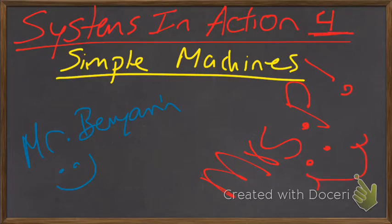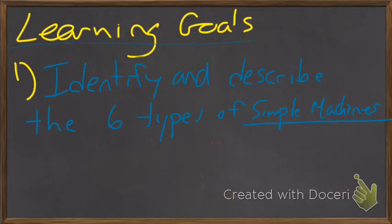This is our fourth video of Systems and Actions. We're looking at simple machines. Our learning goals for this video: we are going to identify and describe the six types of simple machines. I will scribe as Mrs. Podlipski reads them out for me.